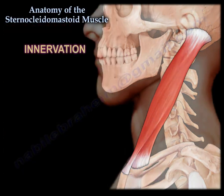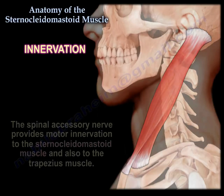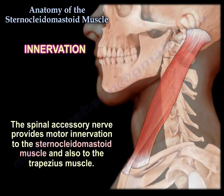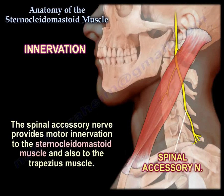Nerve Supply. The spinal accessory nerve provides motor innervation to the sternocleidomastoid muscle and also to the trapezius muscle.